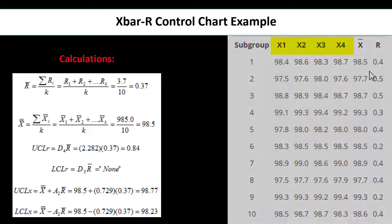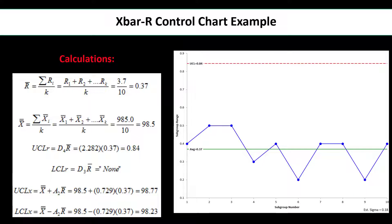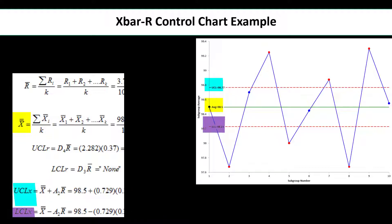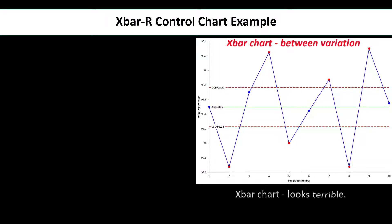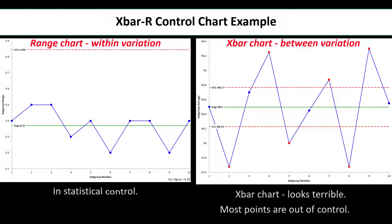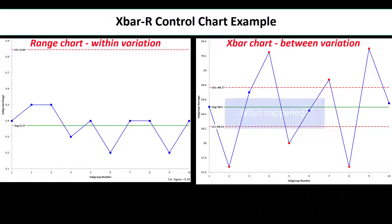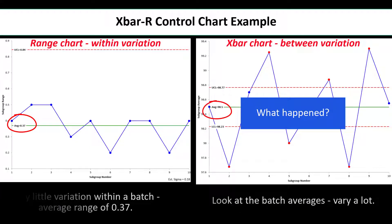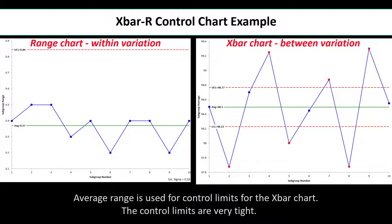Starting with the range calculations: R-bar equals the sum of the R values divided by K, giving 0.37. The upper control limit is D4 times R-bar, which equals 0.84, with no lower control limit. For the X-bar chart, the overall average is 98.5, and the control limits run from 98.23 to 98.77 — very tight. The X-bar chart is looking at variation between subgroups, and this chart looks terrible — most of the points are out of control. The range chart, however, measuring the variation within a subgroup, is in statistical control.